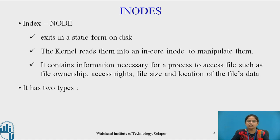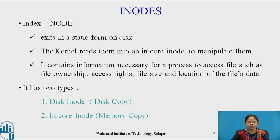An inode has two types. The first type is the disk inode, which is nothing but a copy on disk, that is secondary storage. The second type is the in-core inode, which is the copy in memory. So whenever a file is accessed by a process, an in-core copy of the inode is generated in memory.